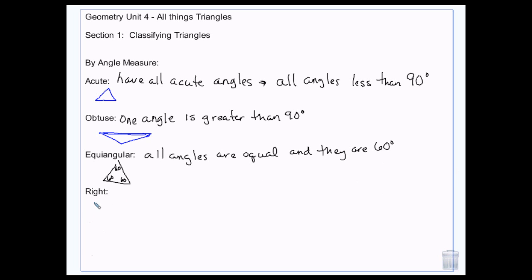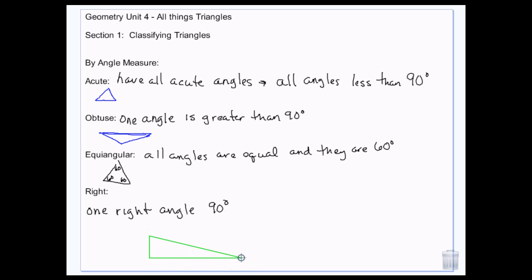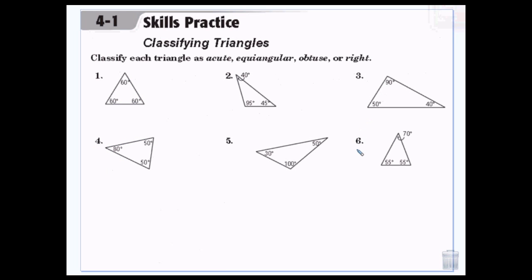And then you have a right triangle, which has one right angle — which is 90 degrees. I can cheat on this one — my perfect right triangle that I just drew freehand. So we're going to practice classifying some of the triangles.